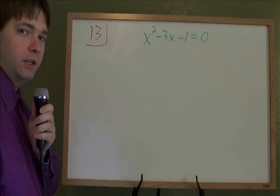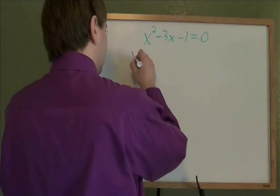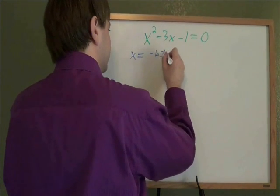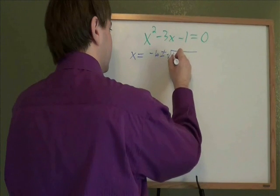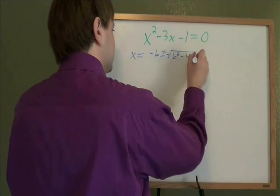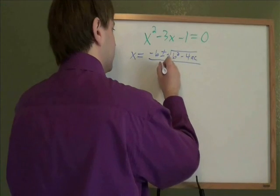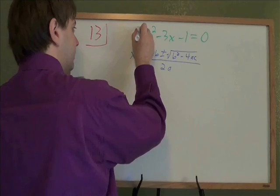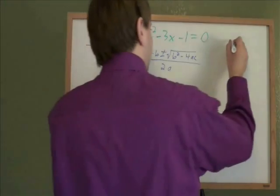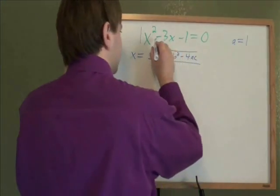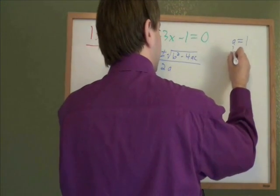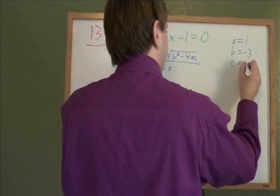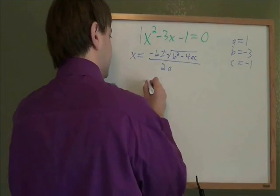To solve this quadratic equation, we are going to use the quadratic formula. Remember that is x equals negative b plus or minus square root b squared minus 4ac all over 2a. So for us, if we just have a plain old x squared, that's the same as 1x squared. So a is 1, b will be negative 3, the number next to the x. And c will be that number on its own, that negative 1 at the end.